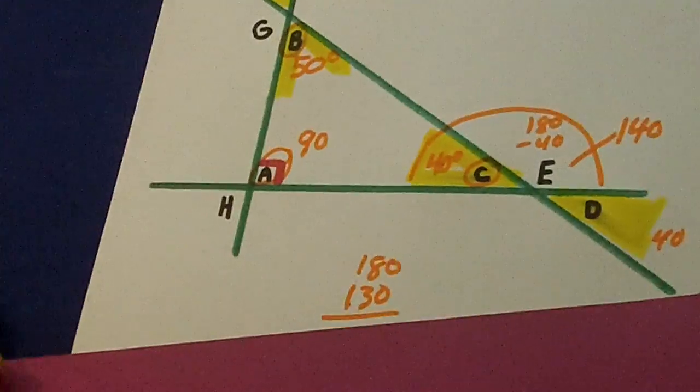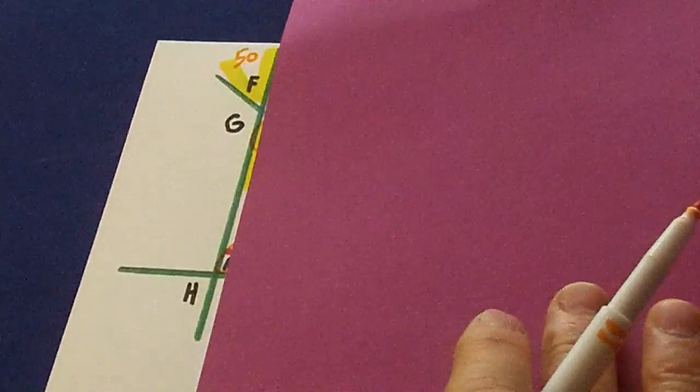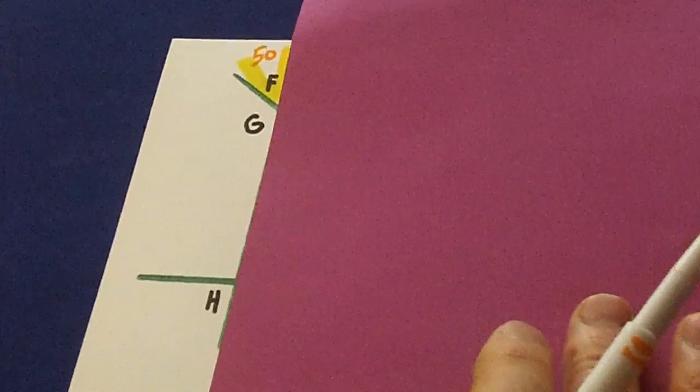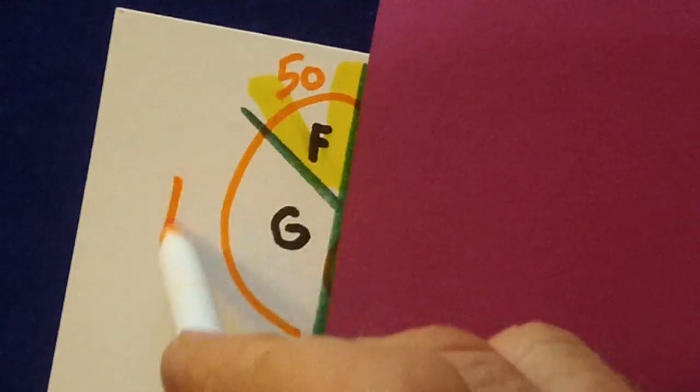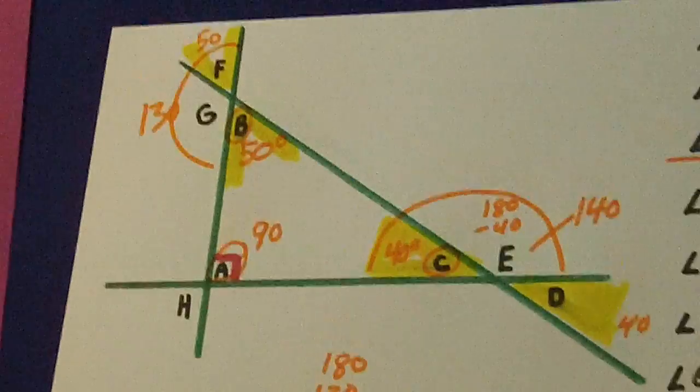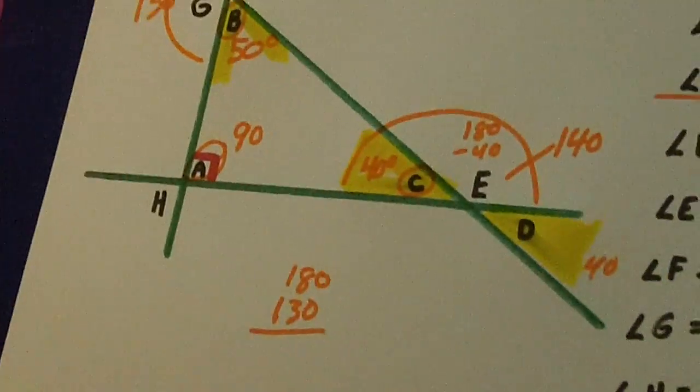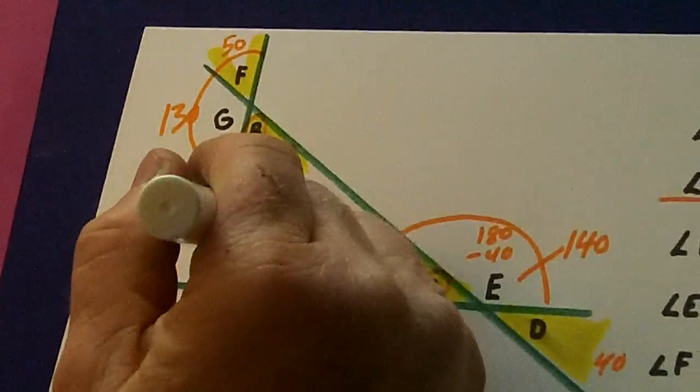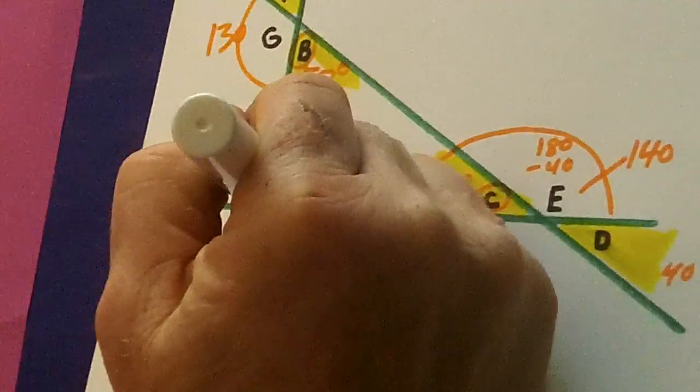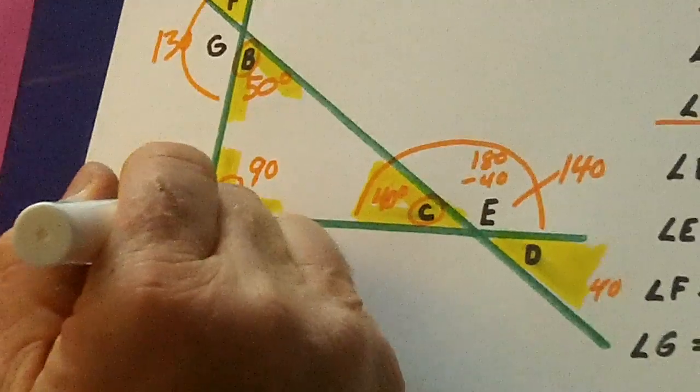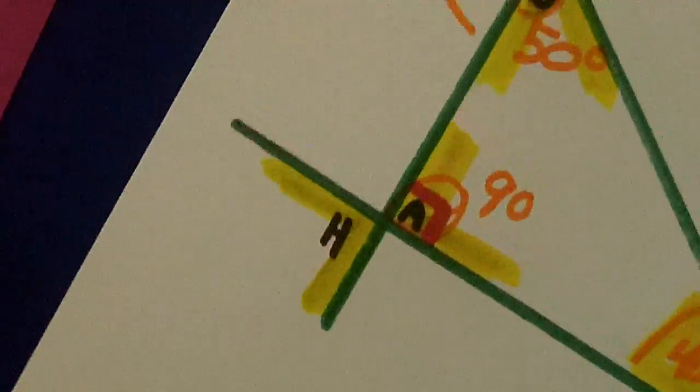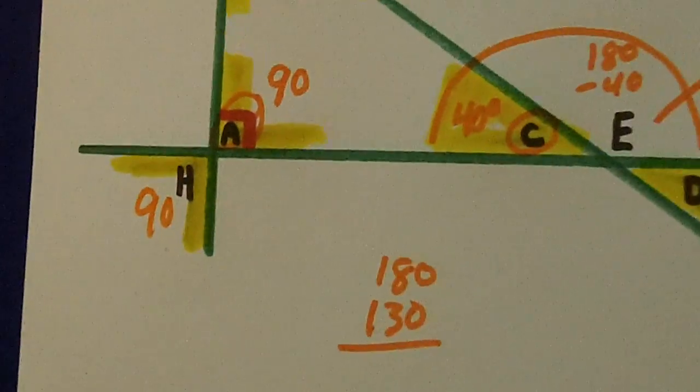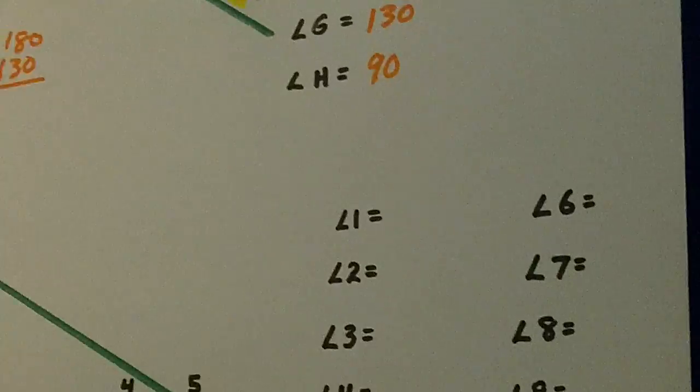Now G. Watch this. Supplementary. 50 plus 130 is 180. G is 130. Then watch this last one. This right angle is a vertical angle with H. So H is also 90.